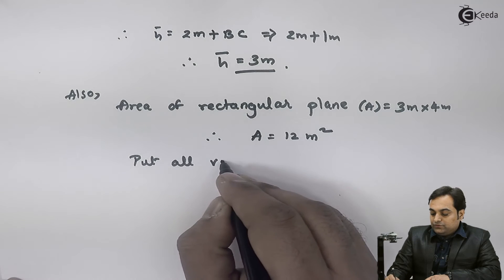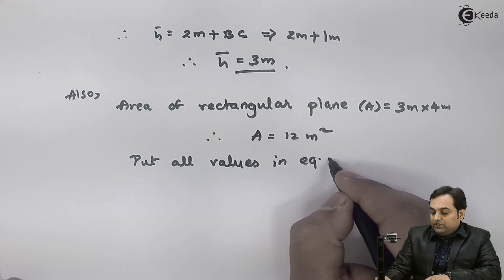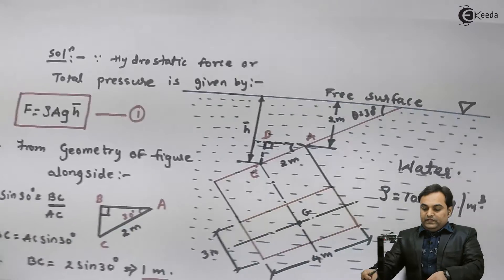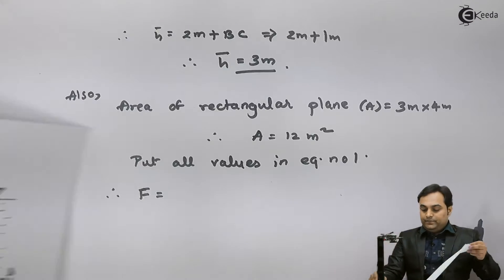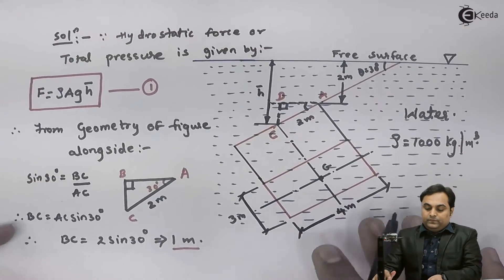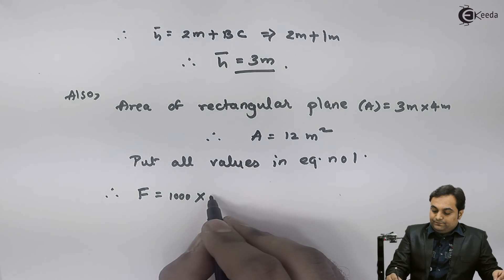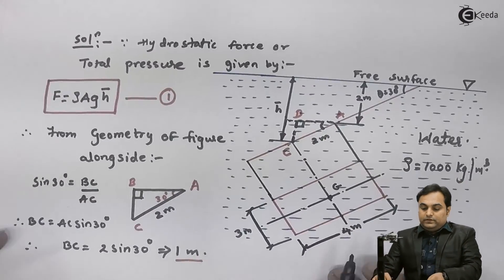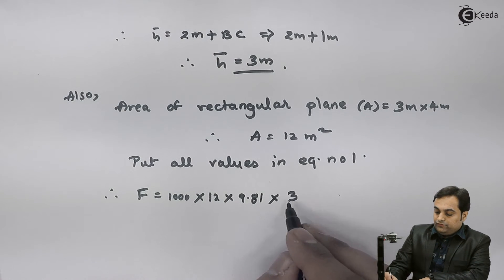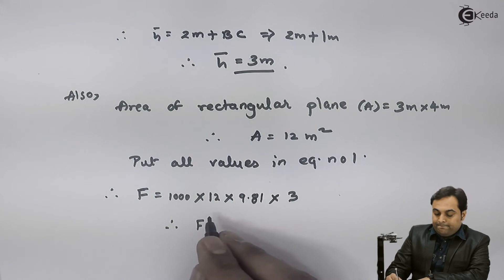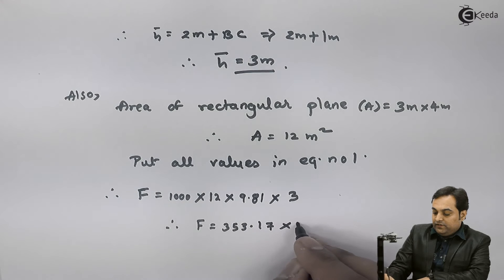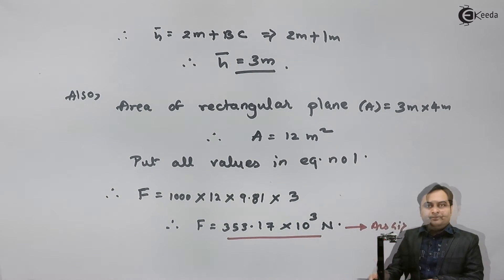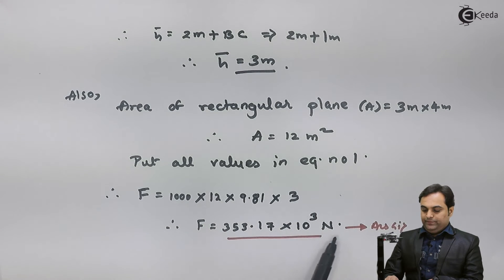Putting all values into equation number one: F = rho × A × g × h_bar = 1000 × 12 × 9.81 × 3. This gives the hydrostatic force F = 353.17 × 10³ N. This is the first answer — the total pressure or hydrostatic force.